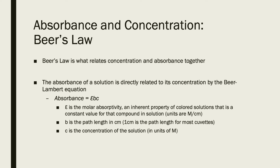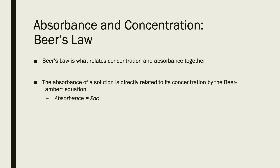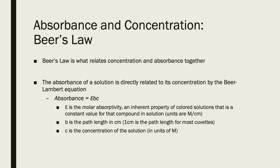The path length b is really the size of the cuvette we put in our instruments. The distance across the cuvette is typically always one centimeter — that's pretty standard pretty much anywhere. This is convenient because when using Beer's Law, we're almost always using cuvettes of that standard size, so the path length is just one centimeter. The last part of the equation, c, is the concentration of our solution, meaning absorbance and concentration are linearly related to each other, with molar absorptivity being constant for a particular compound.